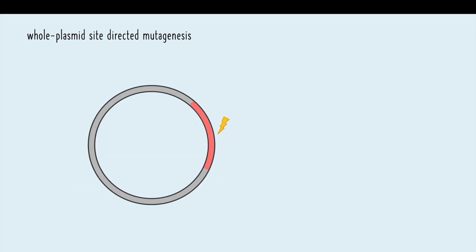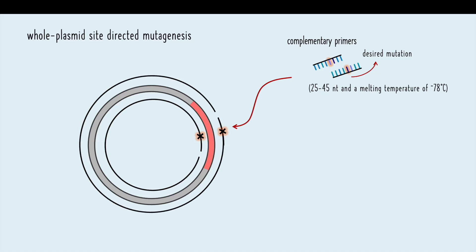With whole plasmid site-directed mutagenesis, a set of complementary primers with the desired mutation are designed and used to amplify the entire plasmid by PCR. The PCR product will contain the mutation.